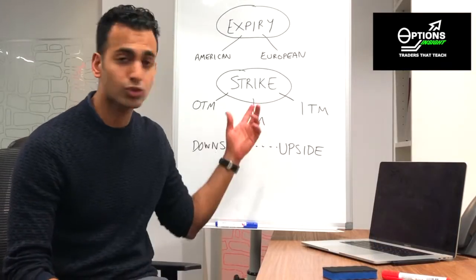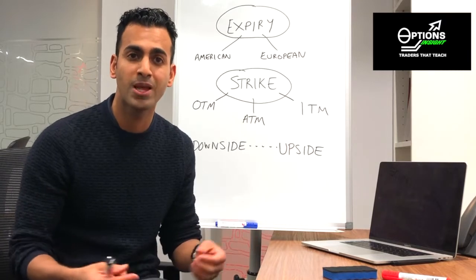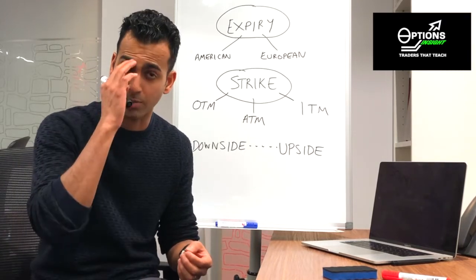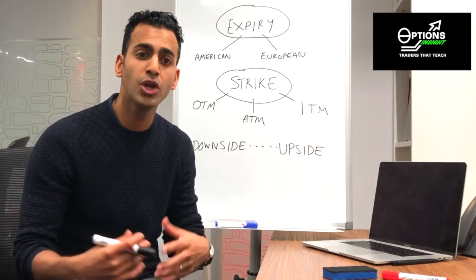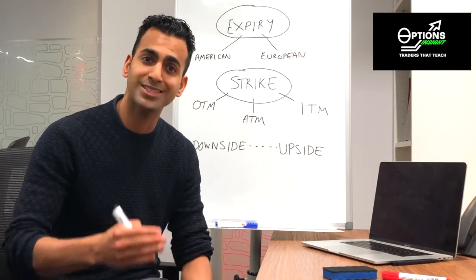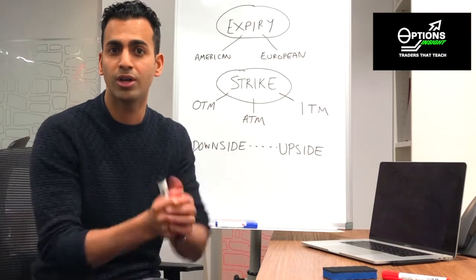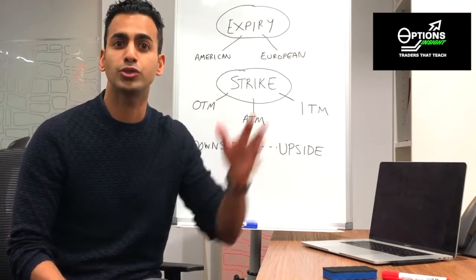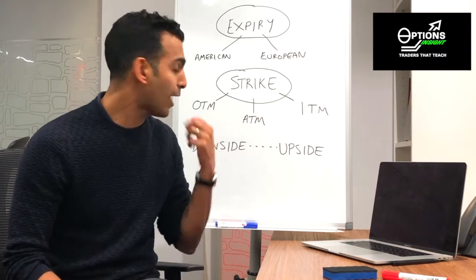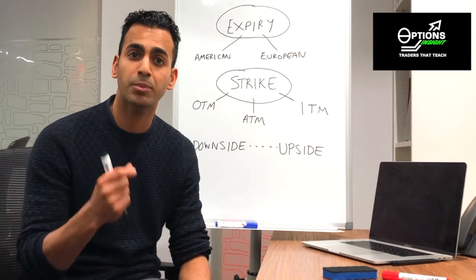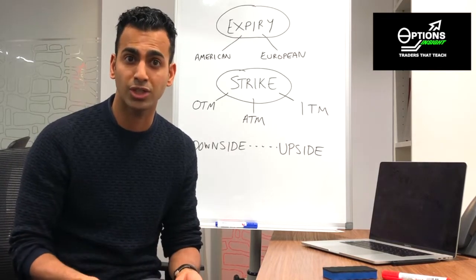When we talk about strikes of an option, the general terms used are at the money (ATM), out of the money, and in the money. For an option to be at the money, the strike has to be equal to where the underlying price currently is. For example, if you have an option on Apple stock and Apple is trading at $400, a $400 strike call or put is considered an at the money option. An out of the money option is when the strike price is away from the current price such that if it were to expire today, you would never exercise it because it's worthless.